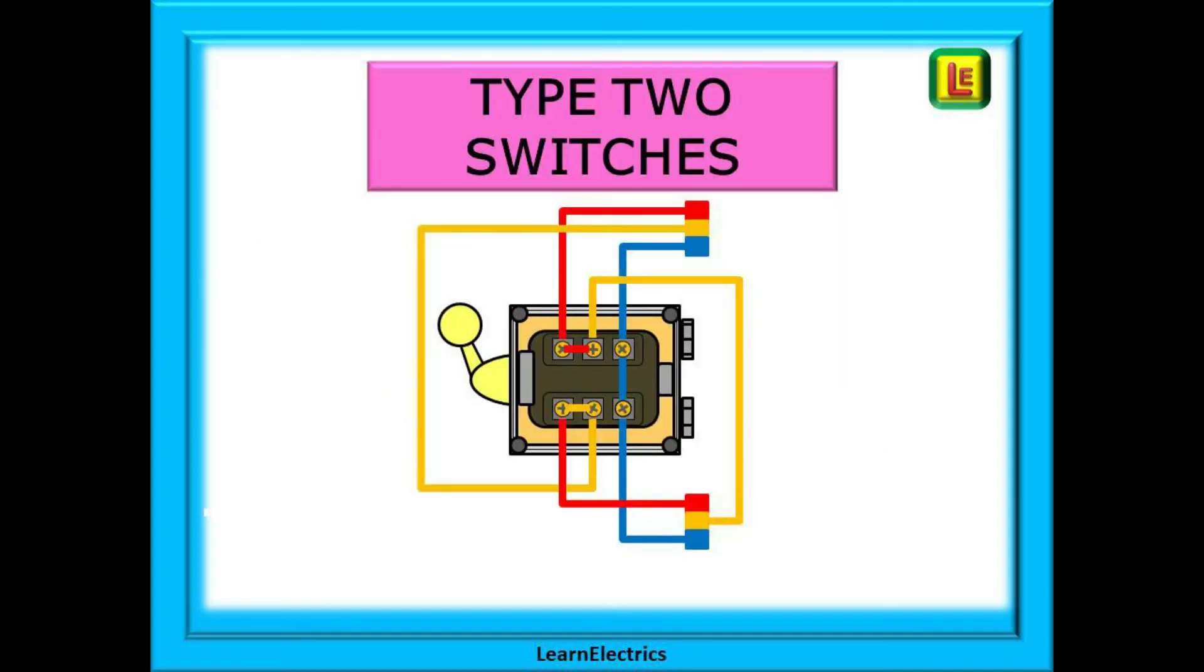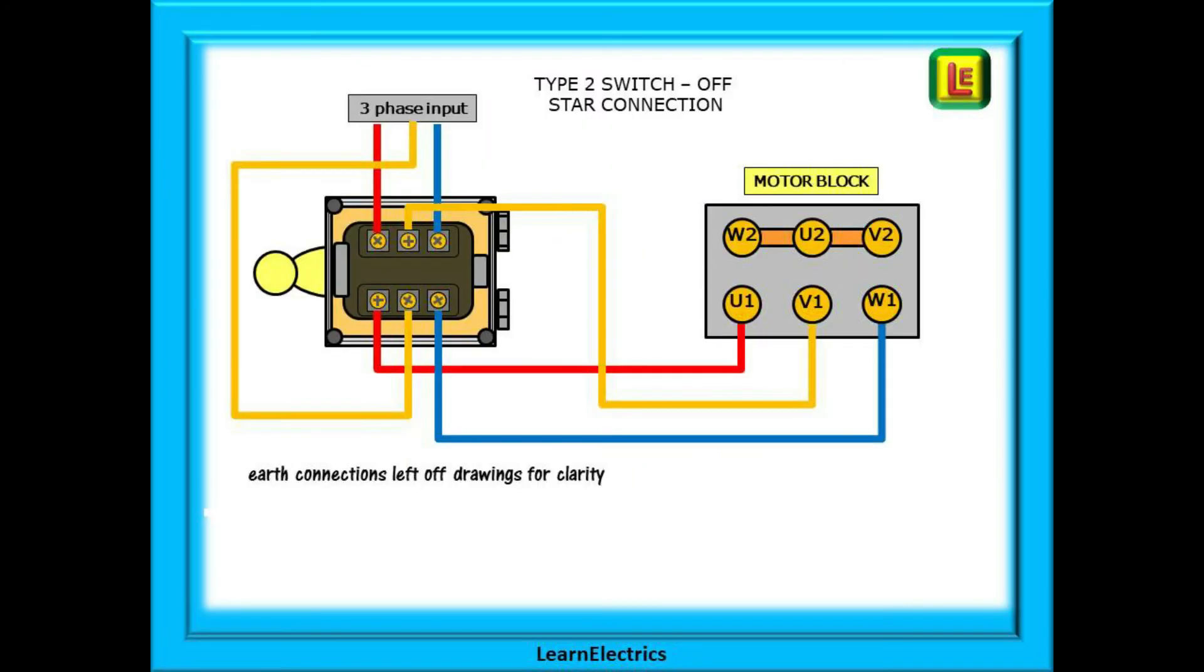Take a look at the type 2 switches now. Remember that the L2 input must be positioned on the opposite side of the switch to the L1 and L3 connections. In the off position look carefully at the positioning of the input cables. L2 input is on the opposite side to L1 and L3.